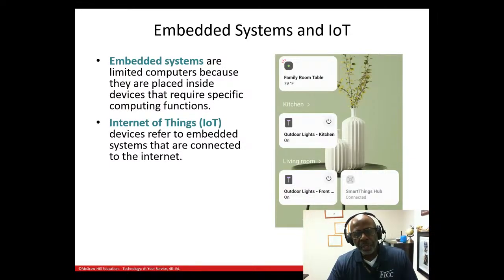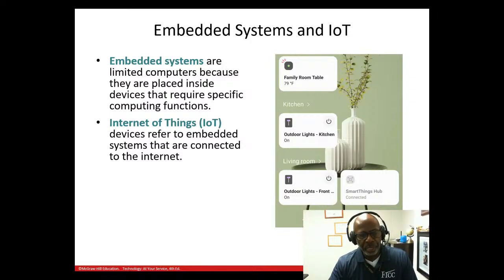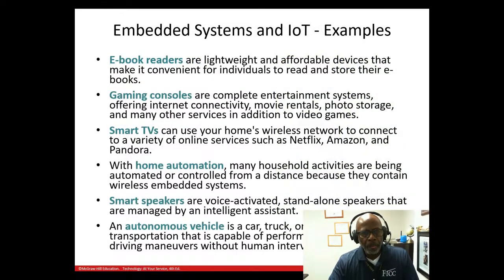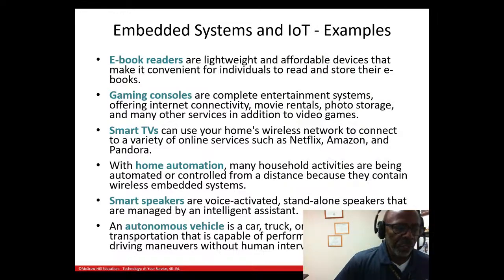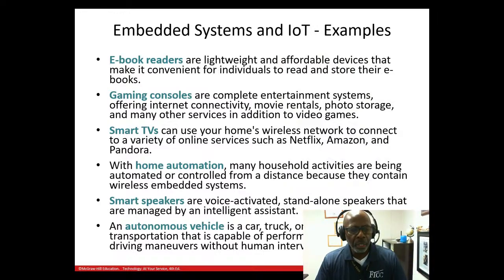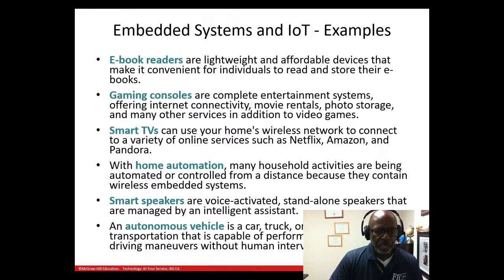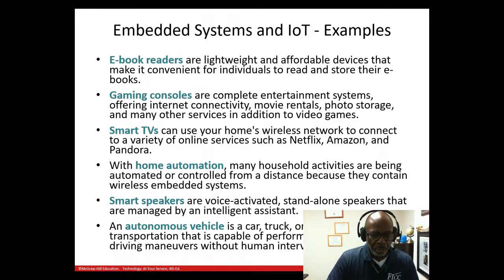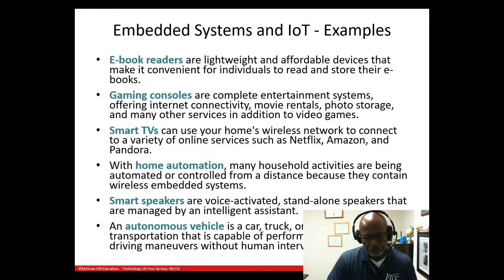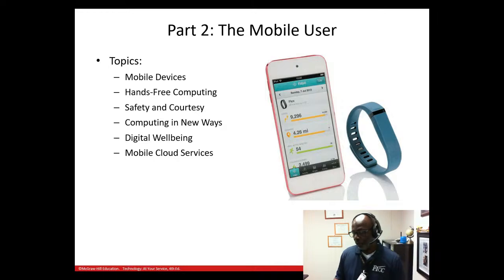Door cameras on your house let you see who's coming over — everything is basically connected to the internet. More examples of the Internet of Things include e-book readers, gaming consoles, smart TVs, home automation, smart speakers like Siri or Alexa, and autonomous cars that drive for you.